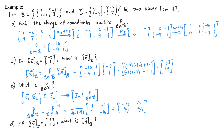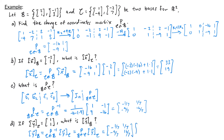In part d, we're given that the C coordinate vector for y is (1, 1), and we're asked to find the B coordinate vector for y. We multiply P_{C→B} times the C coordinate vector: [-1/7, 1/7; -9/7, 16/7] * (1, 1). This gives -1/7 + 1/7 = 0 on top, and -9/7 + 16/7 = 1 on bottom. So the B coordinate vector for y is (0, 1).